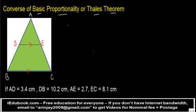then in such a case, this line divides the two lines in the same ratio. In other words, the ratio of AD to DB is equal to the ratio of AE to EC.